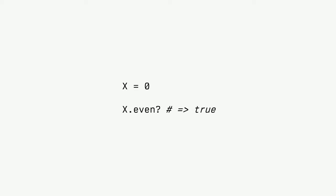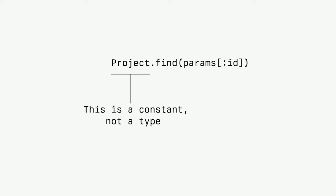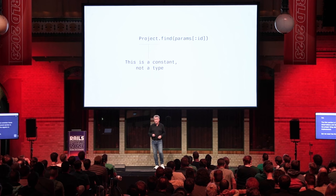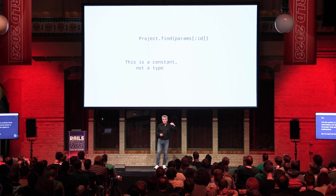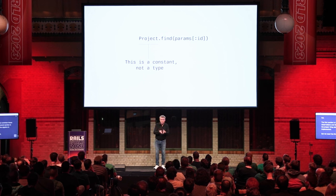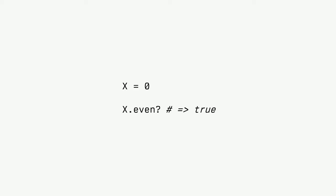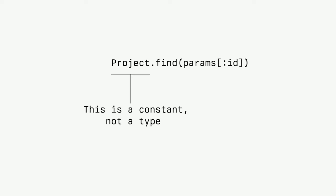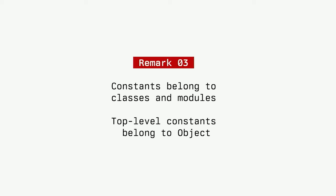Now the next slide is very important: when we write something like Project.find something, that Project is a constant. When we define it with the class keyword, a constant Project is created and a class object is stored in that constant. So Project is exactly the same as X — it's a regular constant; there's nothing special about it. This is a very important technical detail to understand how Zeitwerk works.